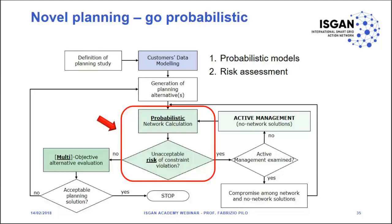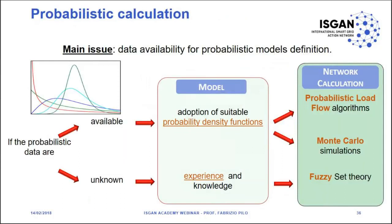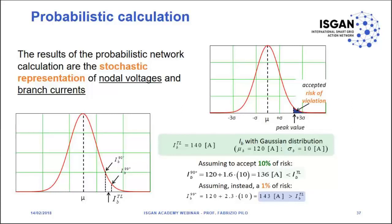Another important point is probabilistic calculation. There are different ways to approach probabilistic models: probabilistic load flow, Monte Carlo simulation, fuzzy set theory. What is really important is that we can manage risk in an objective way. The level of acceptable risk is not easy to establish, but we can define in advance the level of risk we are willing to accept.